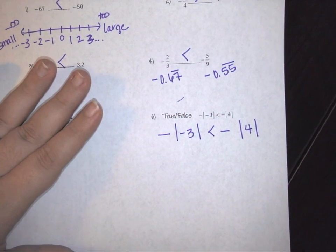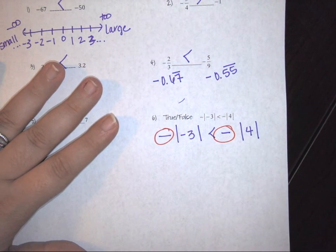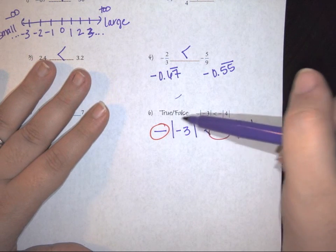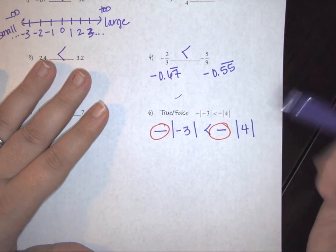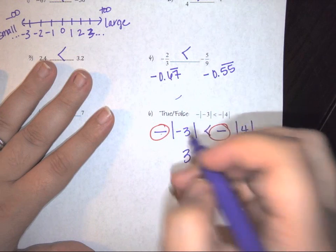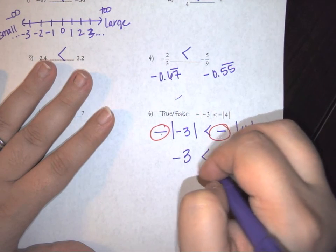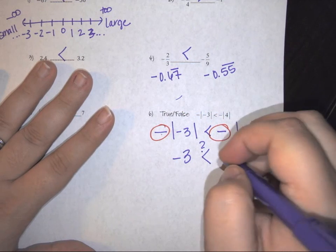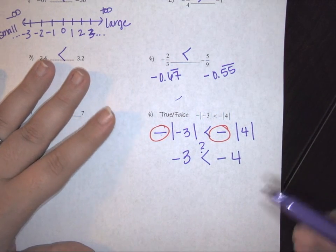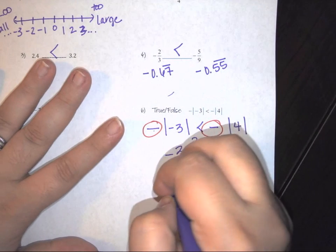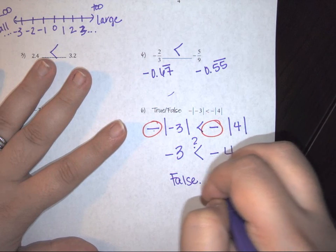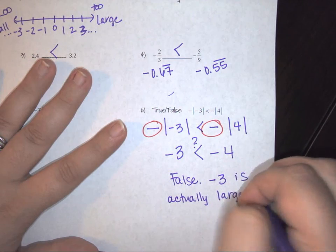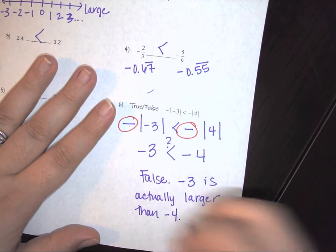Evaluate step by step: the absolute value of negative 3 is 3, then apply the outside negative to get negative 3. The absolute value of 4 is 4, then apply the outside negative to get negative 4. So the question becomes: is negative 3 less than negative 4? That is false — negative 3 is actually larger than negative 4.